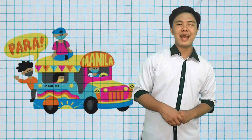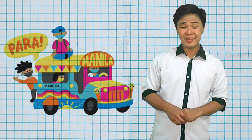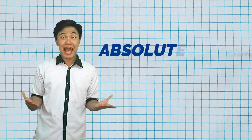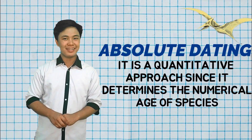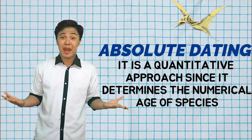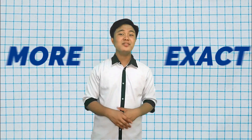I realized that's how relative dating is applied in real-life situations. And that's the exact opposite of absolute dating, which is quantitative, since it determines the numerical age at which a particular species occurred. Therefore, it is way more exact than relative dating.